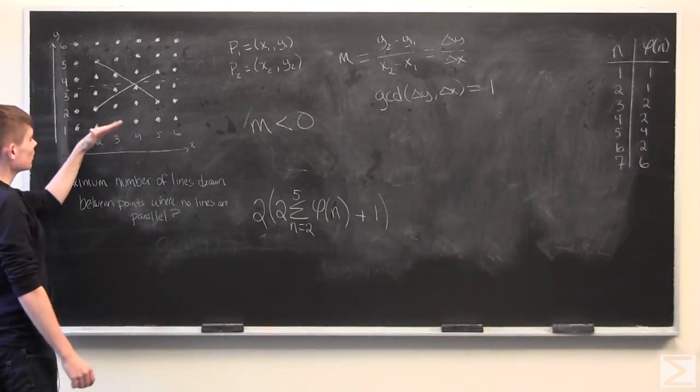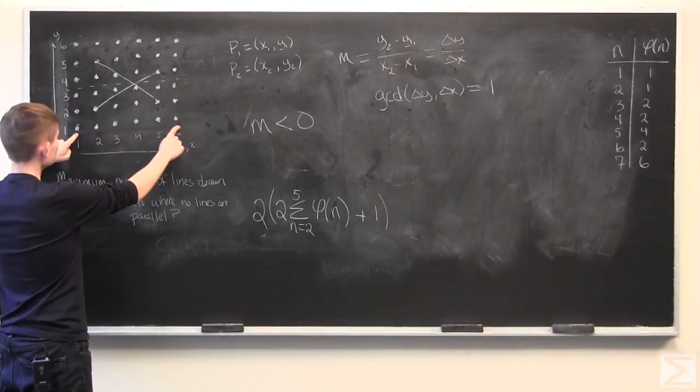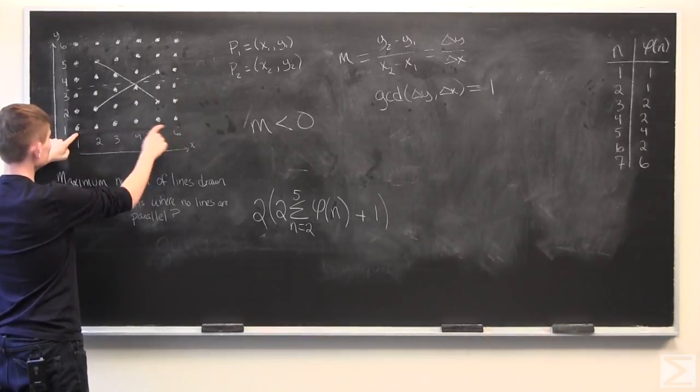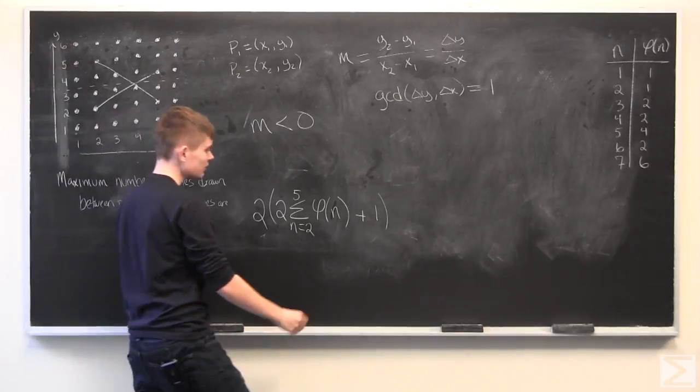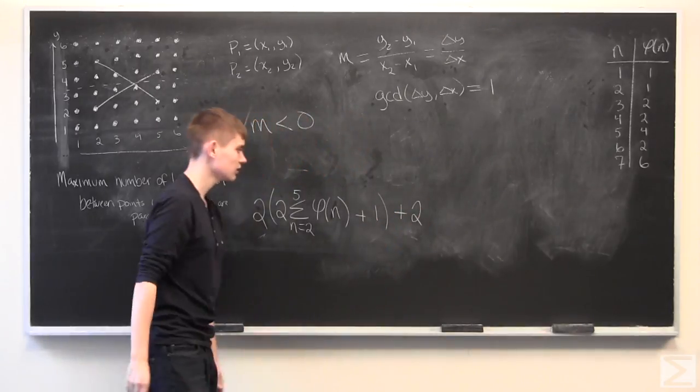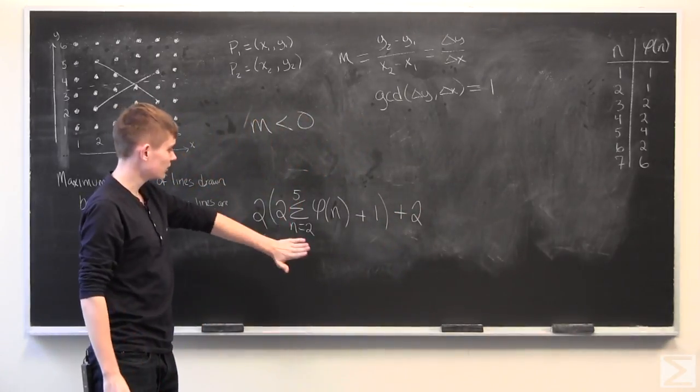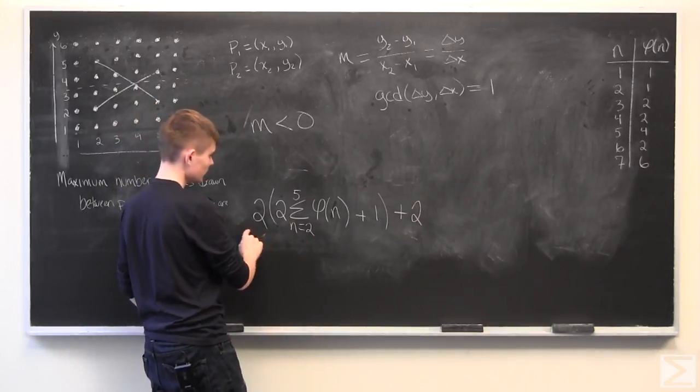We counted all of the different slopes except for the horizontal line, which has slope 0, and the vertical line, which has slope infinite. And the last thing we have to do is add that in. And what we get is this expression, which we can simplify a little bit.